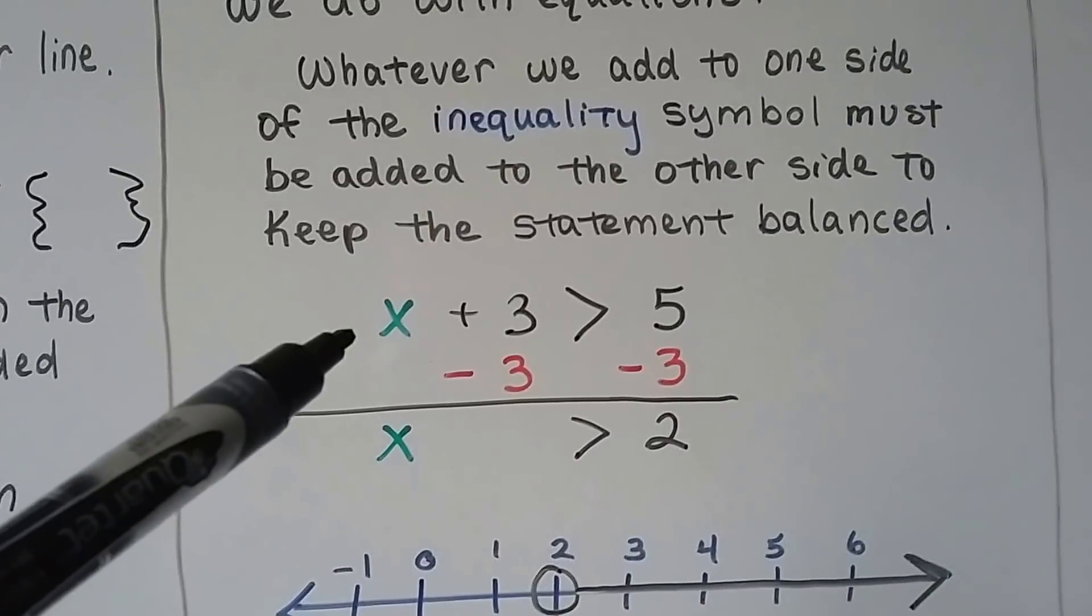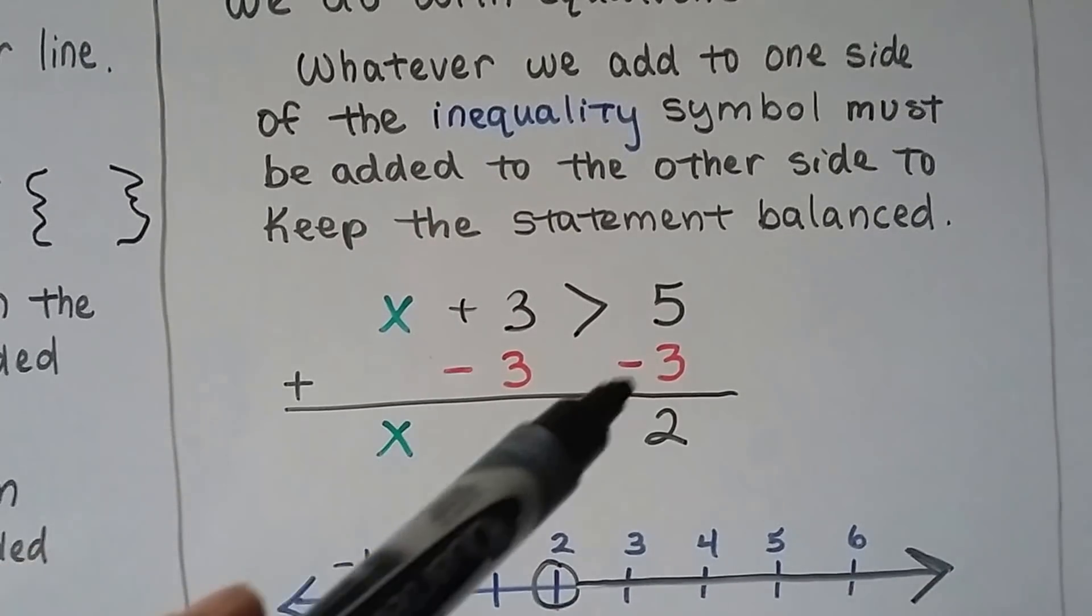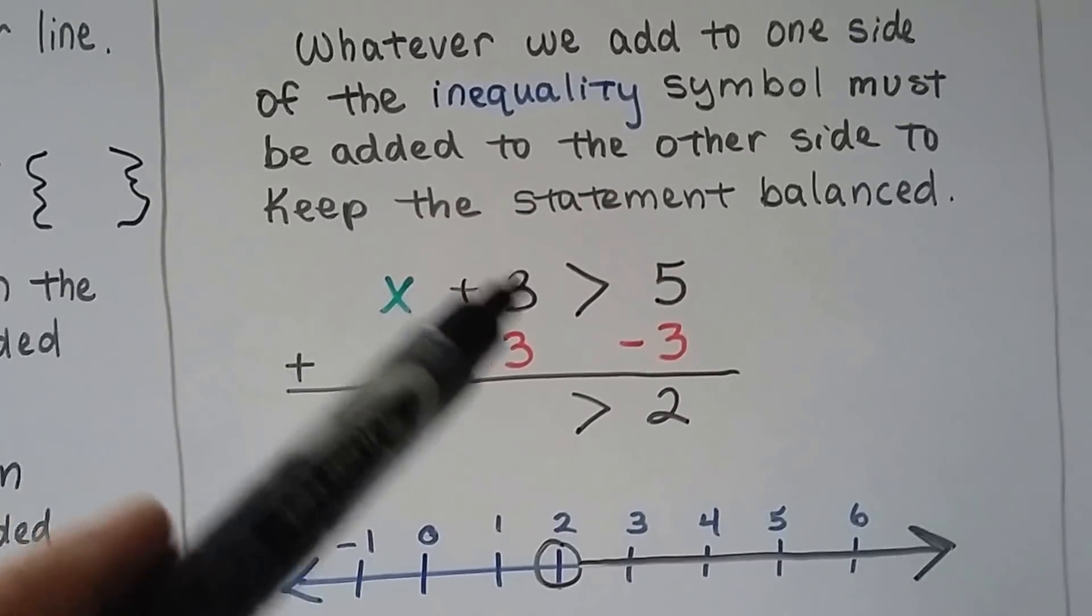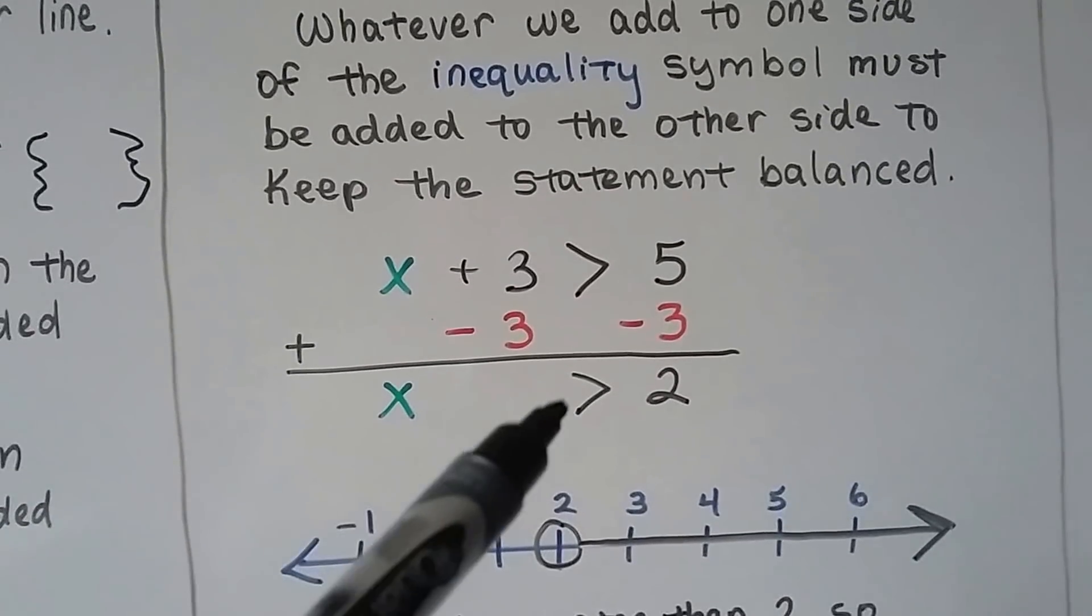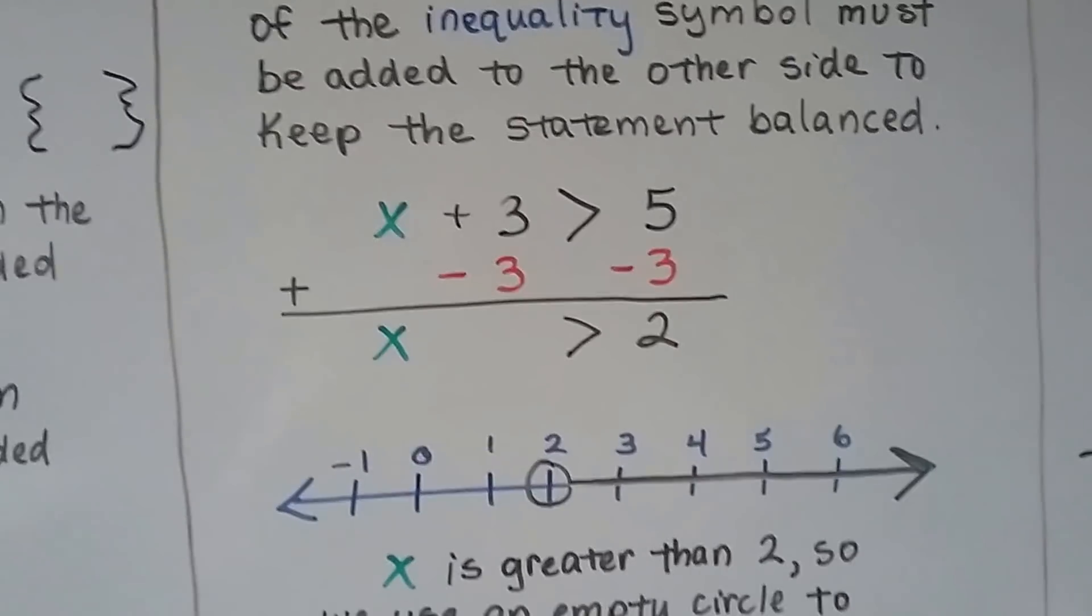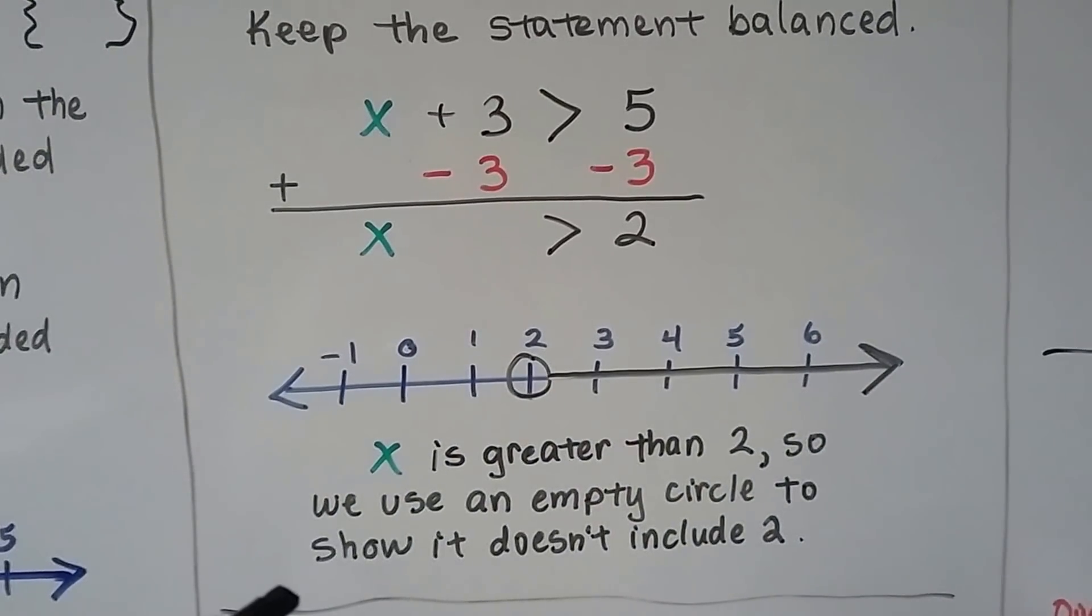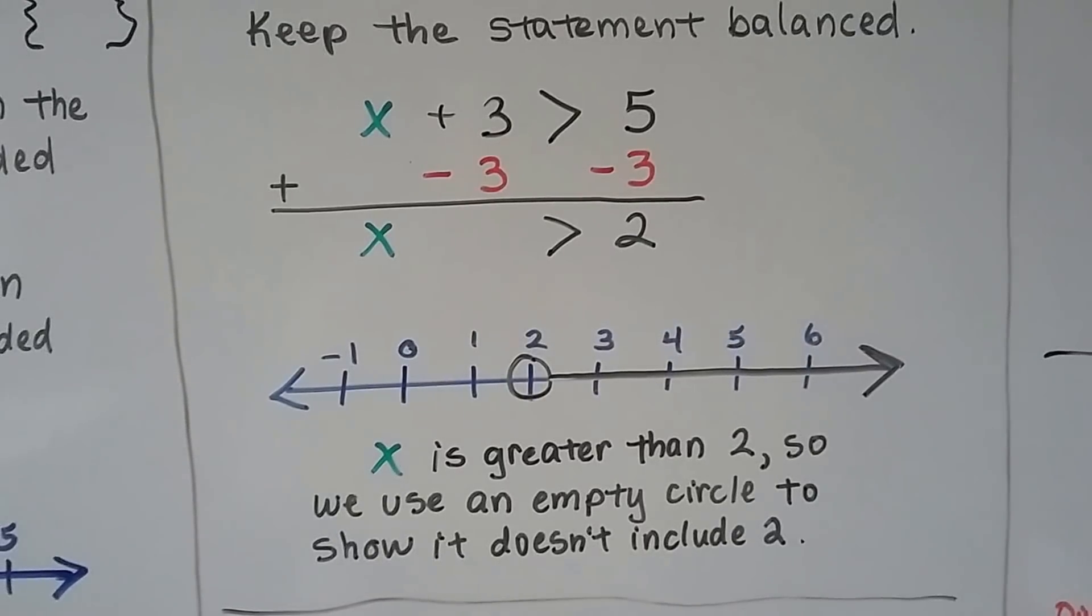If we have x plus 3 is greater than 5, we can add a negative 3 to both sides of this equation, make a zero pair here, and now we've got x is greater than 2, and we can graph it on a number line.